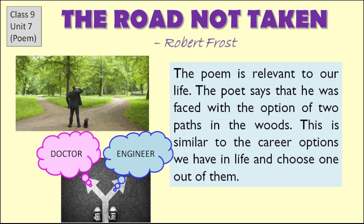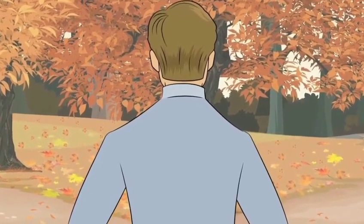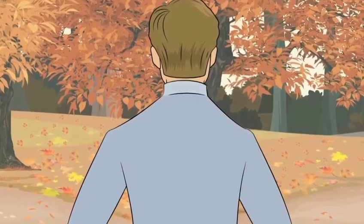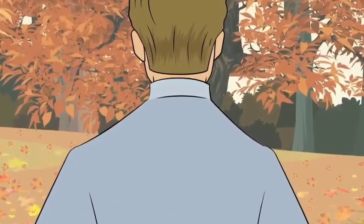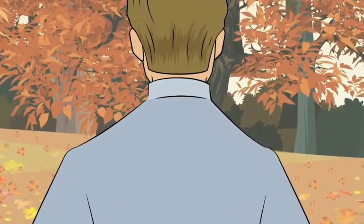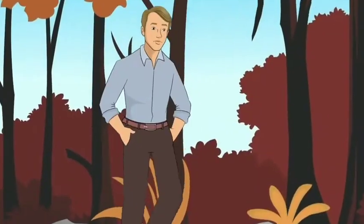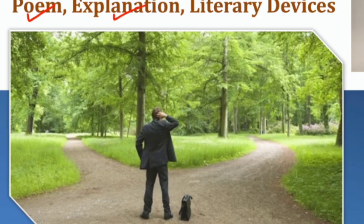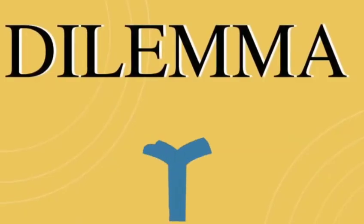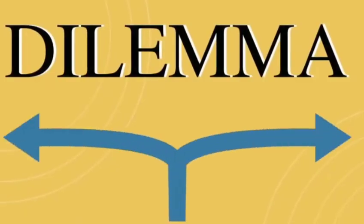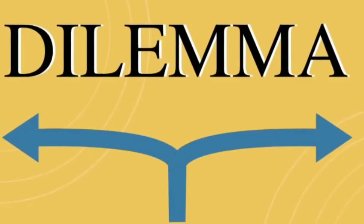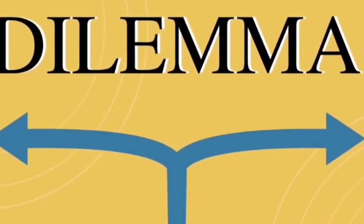The poem starts with the author, Robert Frost, standing at a junction from where the road diverged into two roads, and he was confused about which road to take.